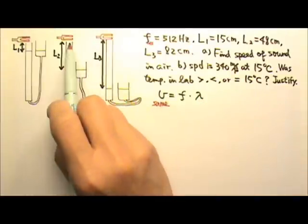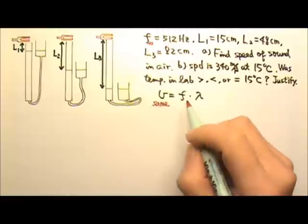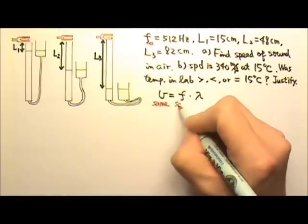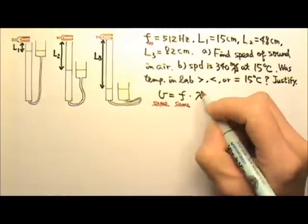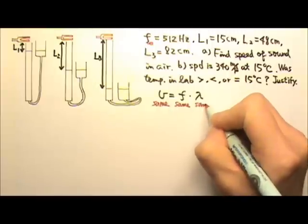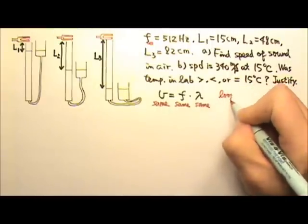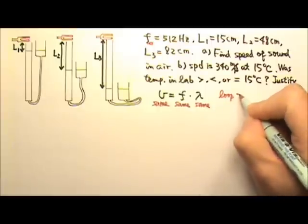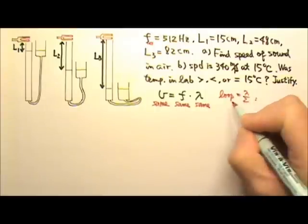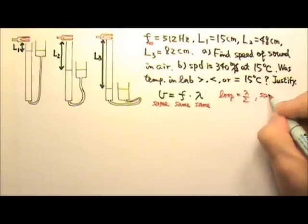And we're using the same tuning fork. That means the frequency also stays the same. That means the wavelength has to stay the same. And since the length of one loop is always half a wavelength, that means the length of a loop also has to stay the same.